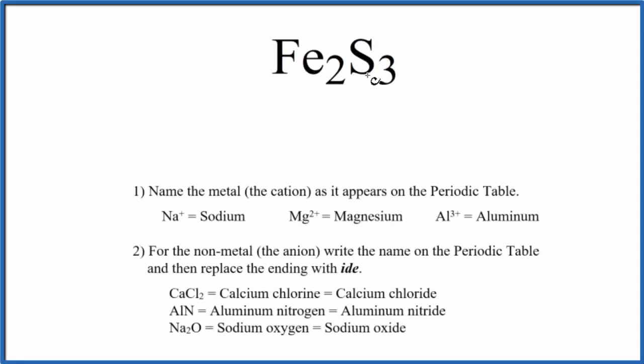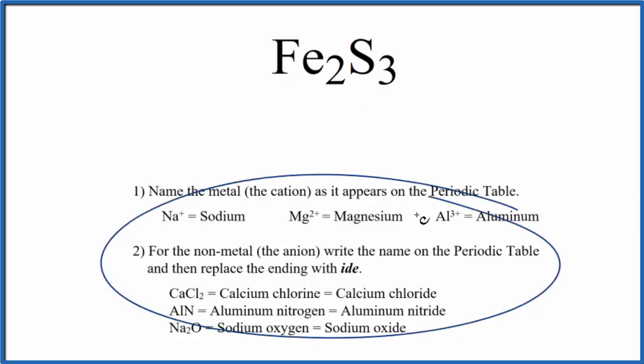To write the name for Fe2S3, we first need to recognize that we have metals and non-metals here. So we have a metal and a non-metal bonded together. We'll consider that to be an ionic compound, and we're going to use these rules here to write the name.